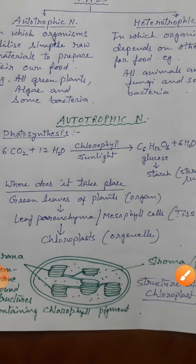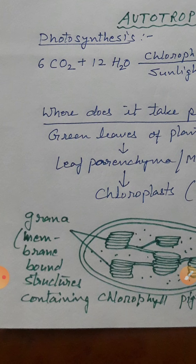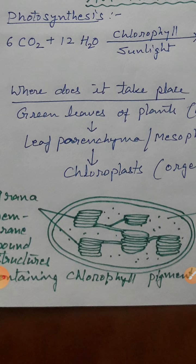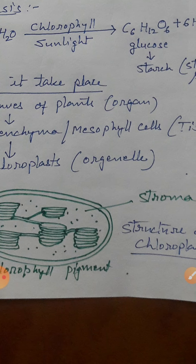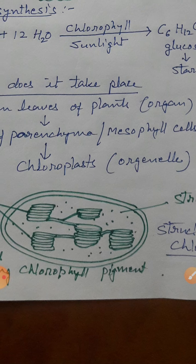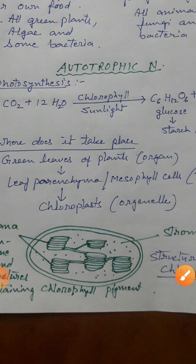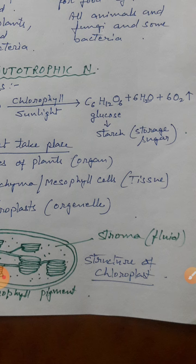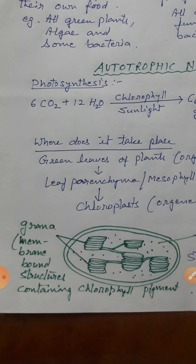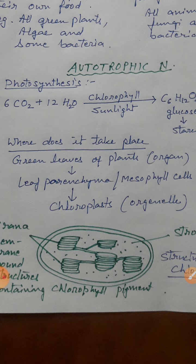Ab question aata hai: where does photosynthesis take place? Plants ke kis hissay mein, yaani kis organ mein hota hai? Your answer is leaves. Leaves are the site of photosynthesis. Leaves ke kis hissay mein hota hai? Aap jante ho ki leaves mein parenchyma tissue hota hai, jis ko leaf parenchyma kehte hain. Isko mesophyll cells bhi kehte hain. To leaf ke mesophyll tissues mein, jo asal mein parenchyma hai, vohan hota hai.